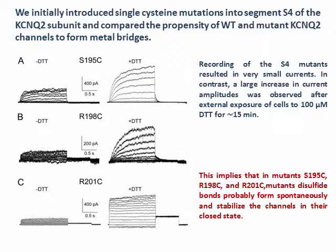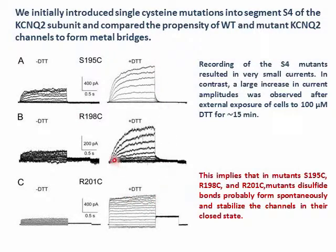Recordings of the S4 mutants S195C, R198C, and R201C without the reducing agent DTT resulted in very small currents. In contrast, a large increase in current amplitude was observed after external exposure of the cells to 100 µM DTT for 15 minutes. This implies that in those S4 mutants, disulfide bonds probably form spontaneously and stabilize the channel in its closed state.